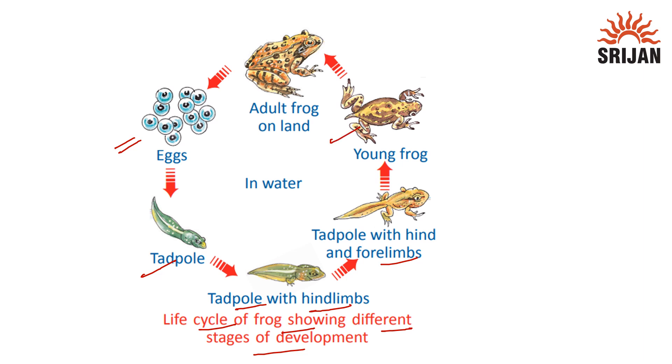Then after the tadpole stage, a young frog is formed, and then an adult frog is formed. They then lay eggs in water and this cycle continues.